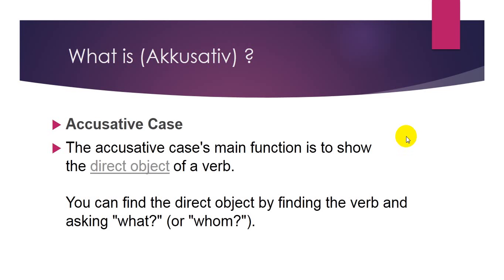What is accusative? What does it mean? Accusative is a case — the accusative case's main function is to show the direct object of a verb. We have two kinds of object in a sentence: direct and indirect. The accusative means the direct object of the verb, and we can find the direct object by finding the verb and asking 'what' or 'whom.'